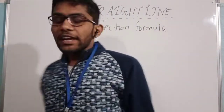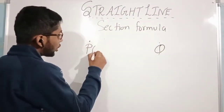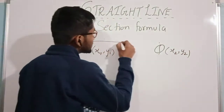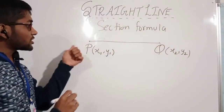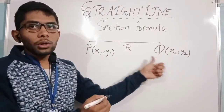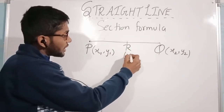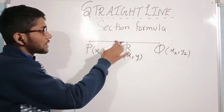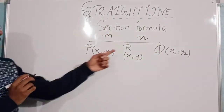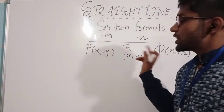Let's suppose we have a point P with coordinates x1, y1 and another point Q with coordinates x2, y2, and PQ is a straight line. Now suppose there is a point R between P and Q whose coordinates x, y we don't know. R divides PQ internally in the ratio M to N.